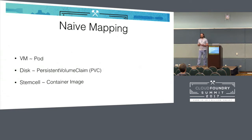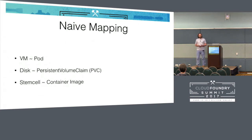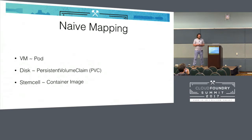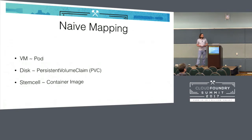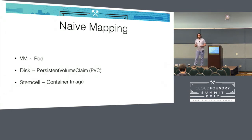If we look at a rather naive mapping of concepts from the BOSH world into the Kubernetes world: VMs on the BOSH side map best to a pod on the Kubernetes side, which is basically a collection of containers that share some namespaces, in particular the networking namespace. A disk maps pretty well to persistent volume claims on the Kubernetes side, which is a handle to a disk you can attach to pods and mount to containers. And a stemcell is basically a container image.